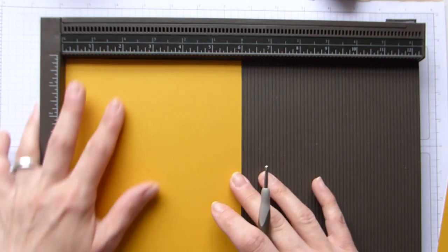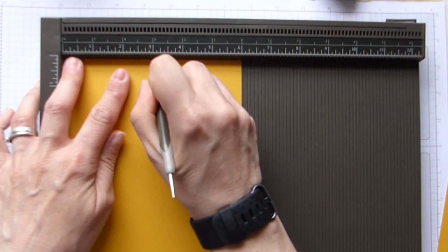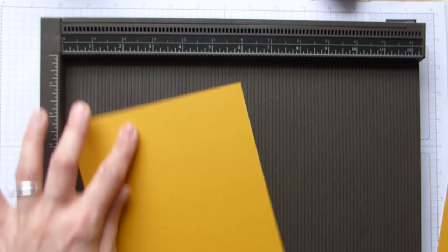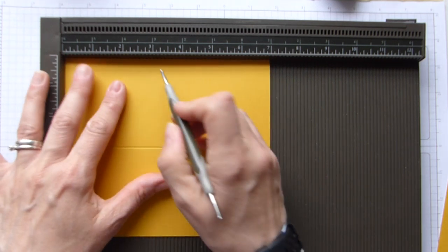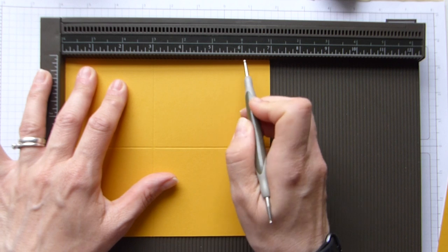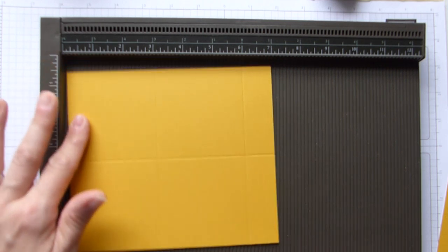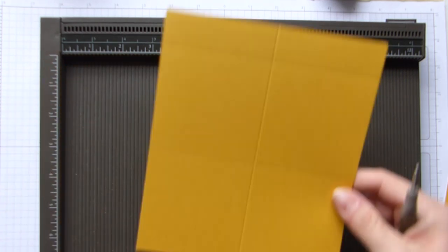On the short side we're going to score at 3 and 6, and that is it for that one. Easy.